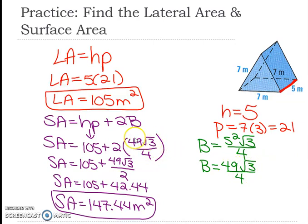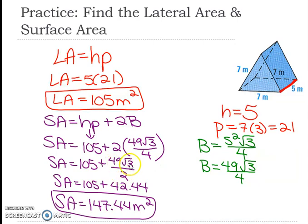The side is 7, so I plug 7 in: 7 times 7 is 49, times radical 3 over 4. That's the area of one equilateral triangle, and there are 2 of them from the formula. So 2 times 49 radical 3 over 4 — I cross-cancel the 2 and 4, divide by 2 on the calculator, and get 42.45. Adding that to 105 gives 147.44.